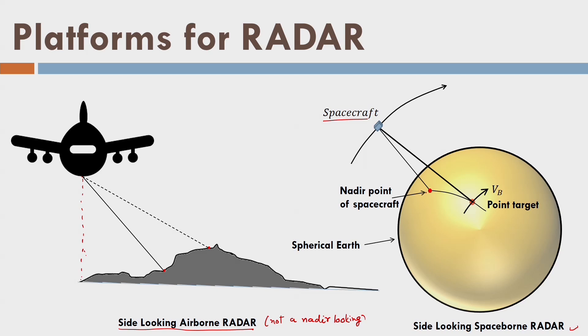For the spaceborne system, the nadir point is indicated, but the first pulse targets a point to the side. So it is also a side-looking spaceborne radar.